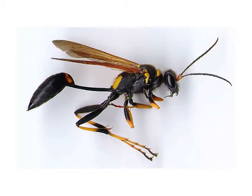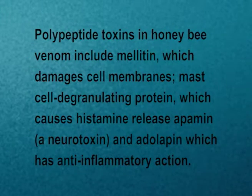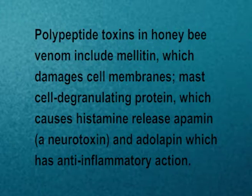Venom composition for wasps and bees: Direct toxic effects are mediated by a mixture of low molecular weight compounds such as serotonin, histamine, acetylcholine, and several kinins. Polypeptide toxins in honey bee venom include Melittin, which damages cell membranes; mast cell degranulation protein, which causes histamine release; Apamin, a neurotoxin; and Adolapins, which have anti-inflammatory action. Enzymes in venom include Hyaluronidase, which allows the spread of other venom components, and Phospholipase.